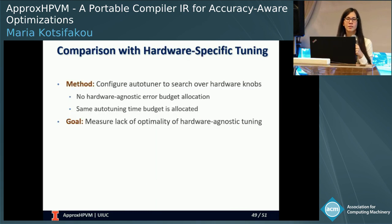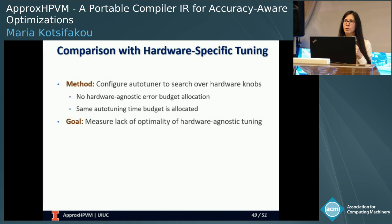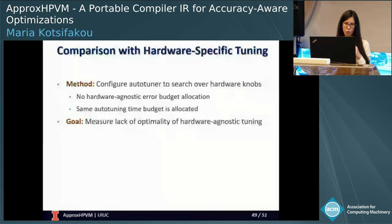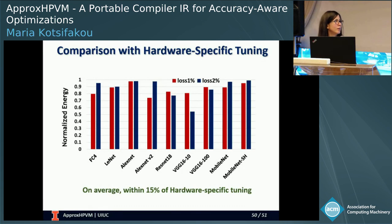The last experiment I want to discuss is the difference between hardware-agnostic and hardware-specific tuning. So far, the auto-tuner was searching over error budgets in a hardware-agnostic way, and hardware-specific choices were only made in the hardware mapping phase — with portability at the IR level as a goal. For this experiment, we configure our auto-tuner to search over hardware knobs directly, in order to measure the penalty of wanting portability. To keep the experiment fair, we allocate the same time budget for auto-tuning as we did for the hardware-agnostic search.